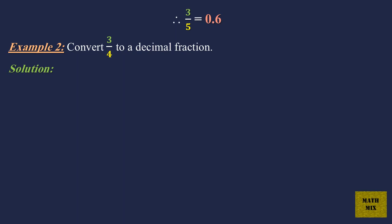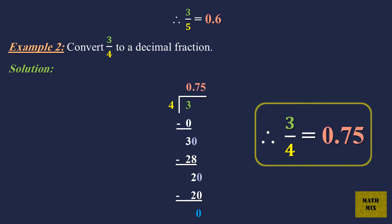Example 2: Convert 3 over 4 to a decimal fraction. Solution: Therefore, 3 over 4 equals 0.75.